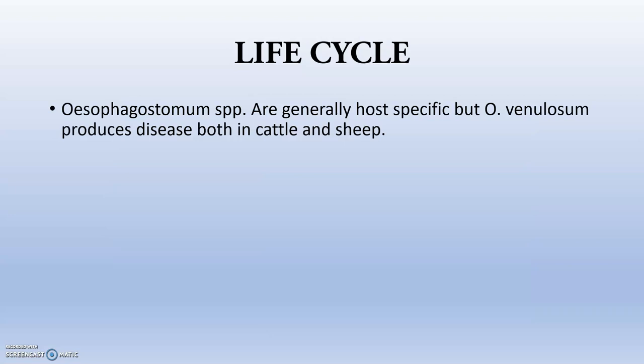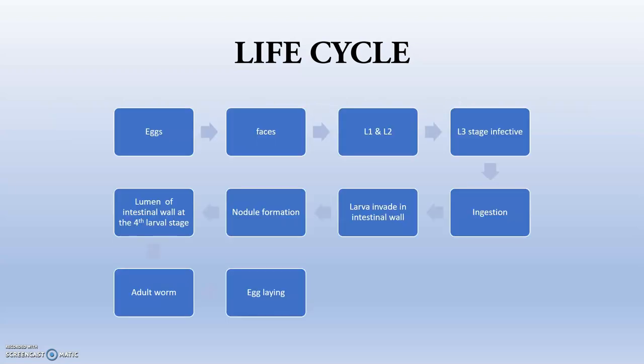Moving to the life cycle: Oesophagostomum species are generally host-specific, but Oesophagostomum venulosum produces disease in both small and large ruminants. Eggs will be present in the feces of infected animals. There will be L1 and L2 stages, and the L3 stage will be infective. The infective stage is ingested by the animal. Larvae invade the intestinal wall, then there will be nodule formation. Inside the nodule lumen there will be fourth stage larvae, then adult worm formation, and egg laying. Those eggs will be passed in the feces.